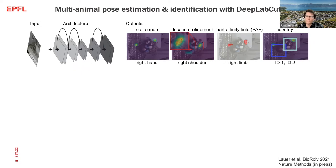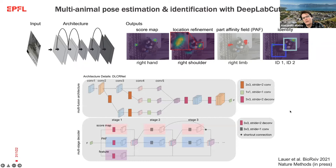One key question is what type of limbs should one predict for different body plans of animals. In our multi-task CNN, we also introduced another head that can predict the identity of the animals if the individual identity has been annotated, as in the case of the marmosets. Inspired by higher resolution nets, we changed the ResNet architectures to include multi-fusion pathways to boost performance, and also introduced a multi-stage decoder that recurrently refines predictions of score maps, part affinity fields, and identity.